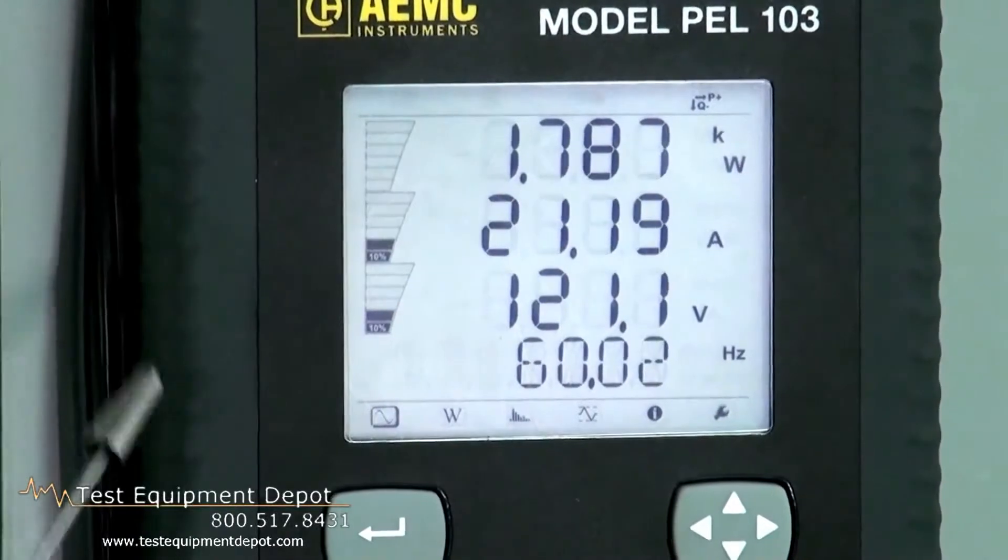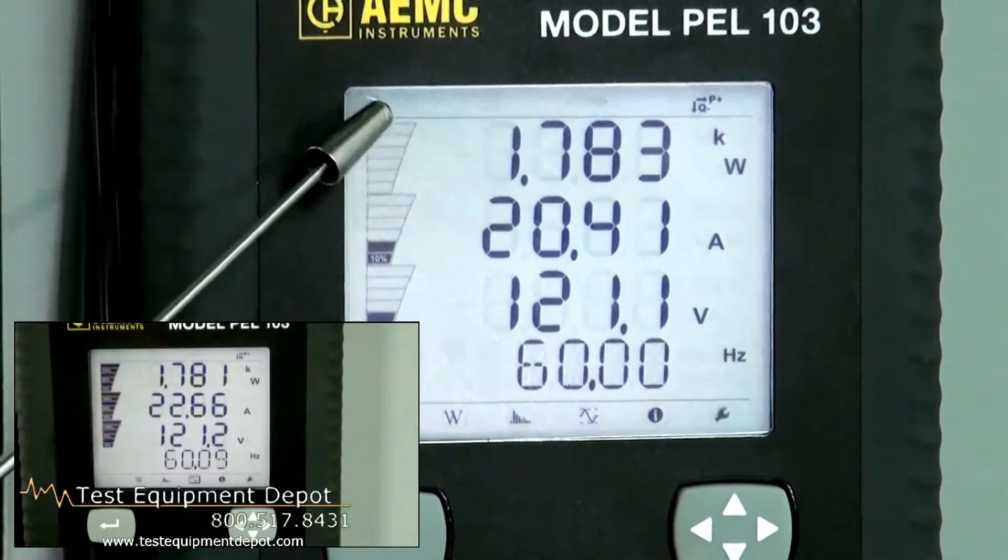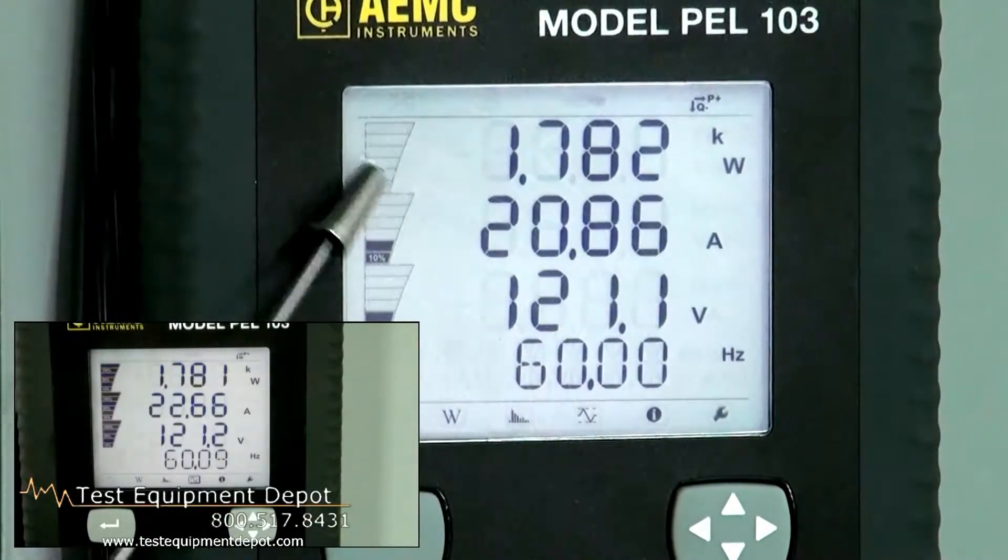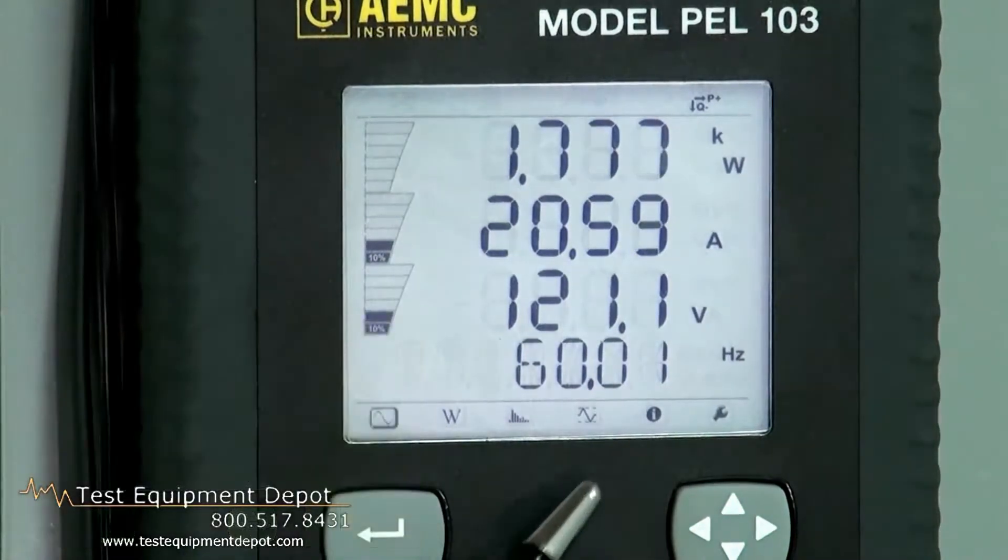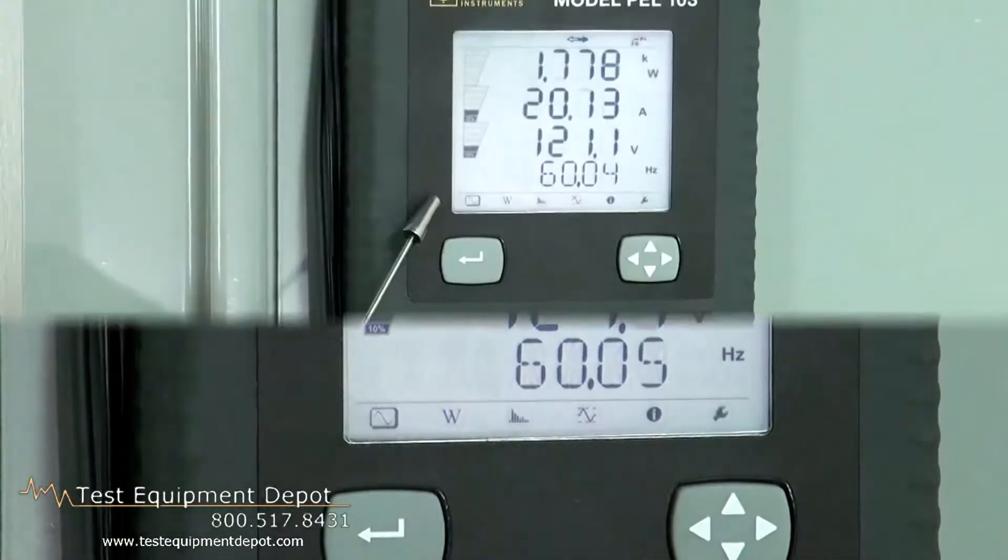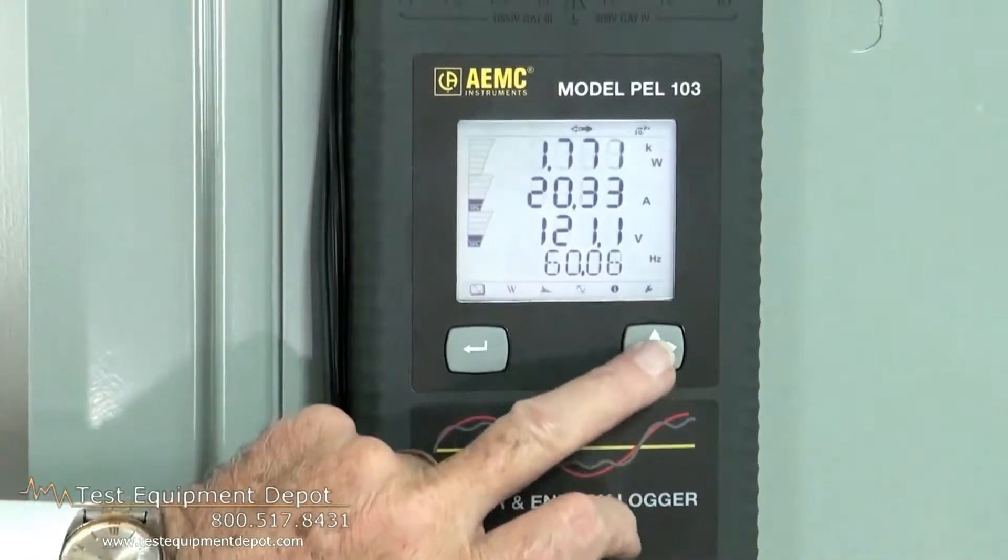Up top here we have watts, and that is demand. That's instantaneous. Here we have amperage. Here we have voltage. And here we have frequency. We have our toolbar here, and we have our selector button. It allows us to go and pick up various functions.